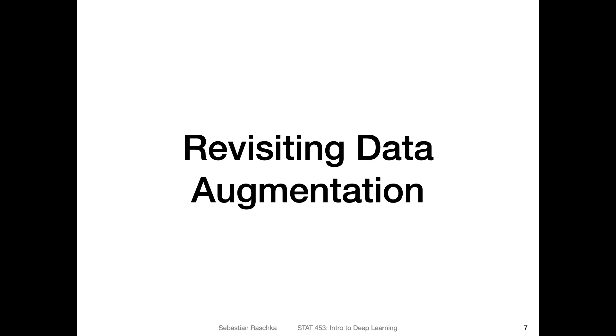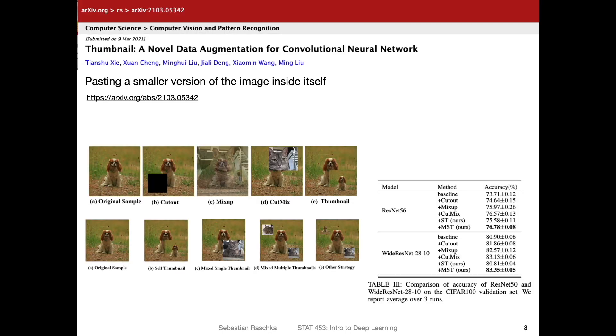Since we talked about data augmentation in class not too long ago, there was actually an interesting paper I just saw that might be interesting in the context of your class project, if you want to improve the performance of your model and have a relatively small dataset. However, I should also say, data augmentation does not always help if the dataset is small, kind of counterintuitively, sometimes it only helps if the dataset is relatively large, at least in my experience. So in practice, it's always another thing to try and to see whether it works or not. But yeah, regarding this paper here, it's called Thumbnail, Novel Data Augmentation for Convolutional Neural Networks.